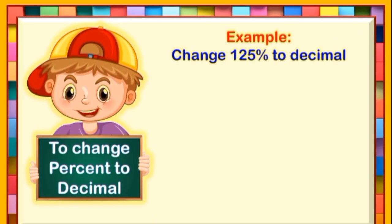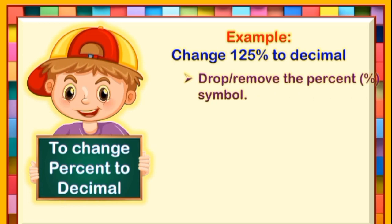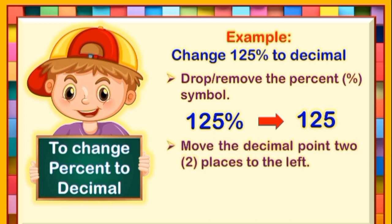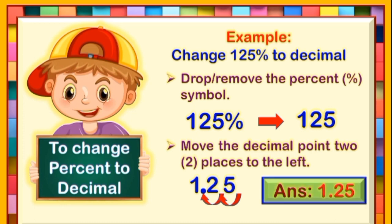Let's have this second example. Change 125% to decimal. The first step is to drop or remove the percent symbol. We have 125%; if you delete the percent symbol, we will have 125. The second step is to move the decimal point two places to the left. Since 125 is a whole number, the decimal point is after the one's digit. So let us move it: 1, 2. The decimal point now is in between the digits 1 and 2. Therefore, the final answer is 1.25.